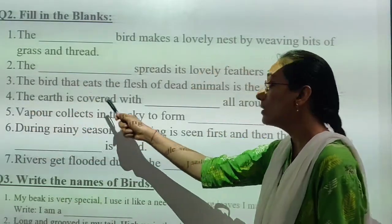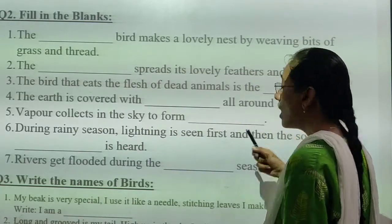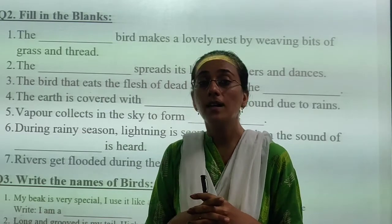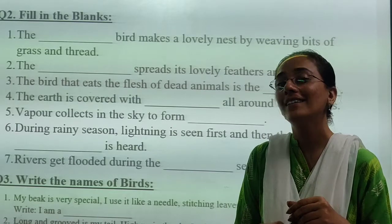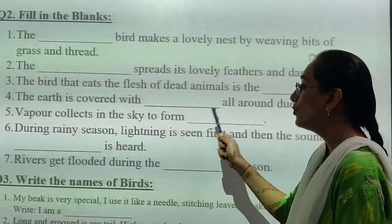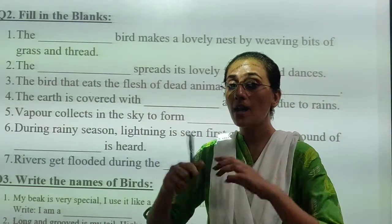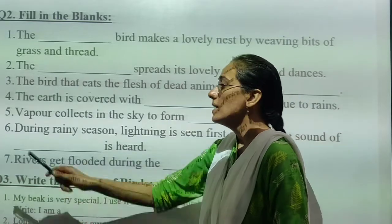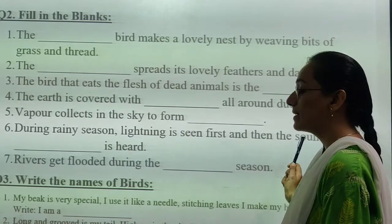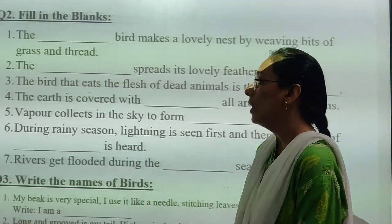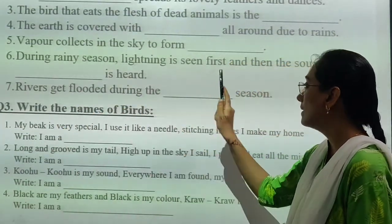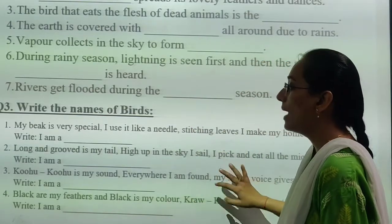Fourth: the earth is covered with dash all around due to rains — what covers the earth because of rains? Greenery. Fifth: vapor collects in the sky to form dash — vapor collects in the sky to form clouds. Sixth: during heavy rain season, lightning is seen first and there is a sound of dash heard. Seventh: the rivers overflow during the dash season — that you have to write.